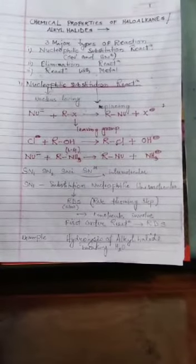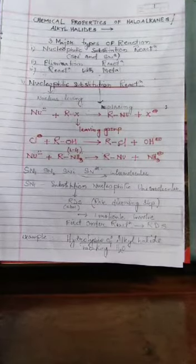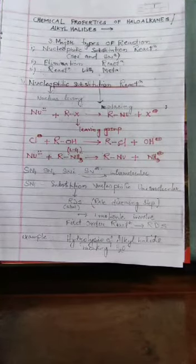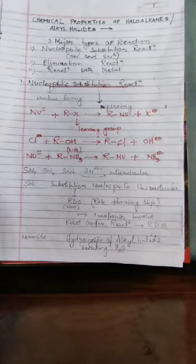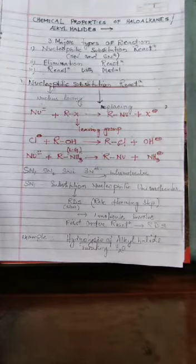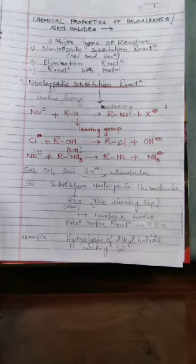After the preparations of haloalkane and alkyl halide, now we will do chemical properties of haloalkane and alkyl halide. Under the chemical properties, three major types of reactions are there. The first one is nucleophilic substitution reactions, that is SN1 and SN2.